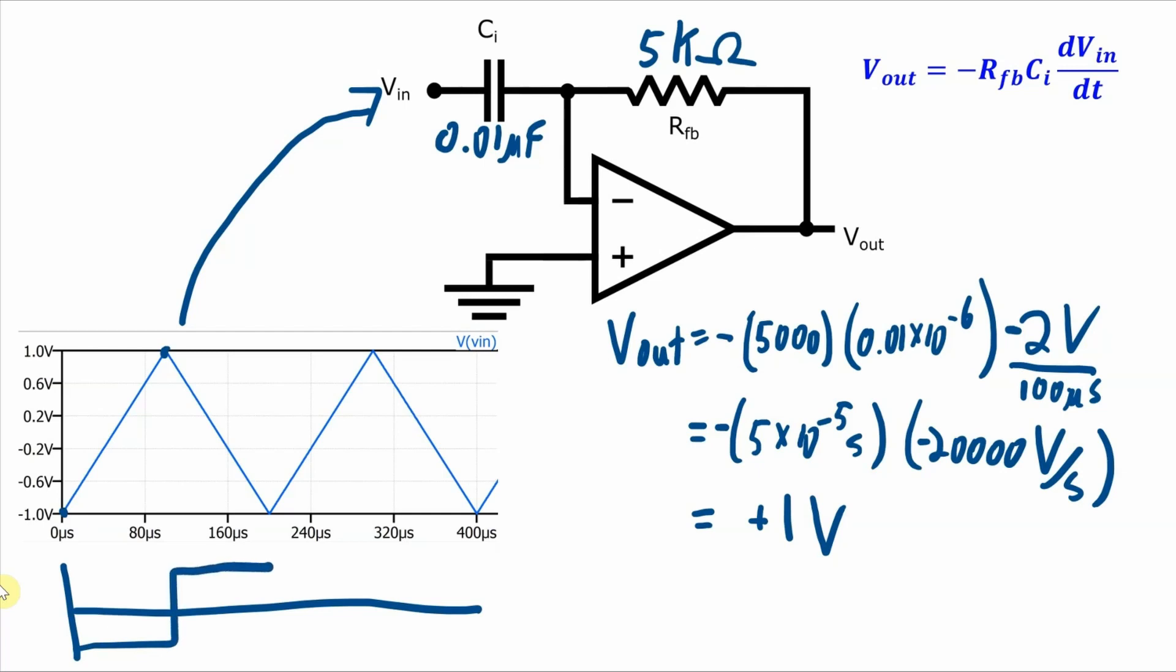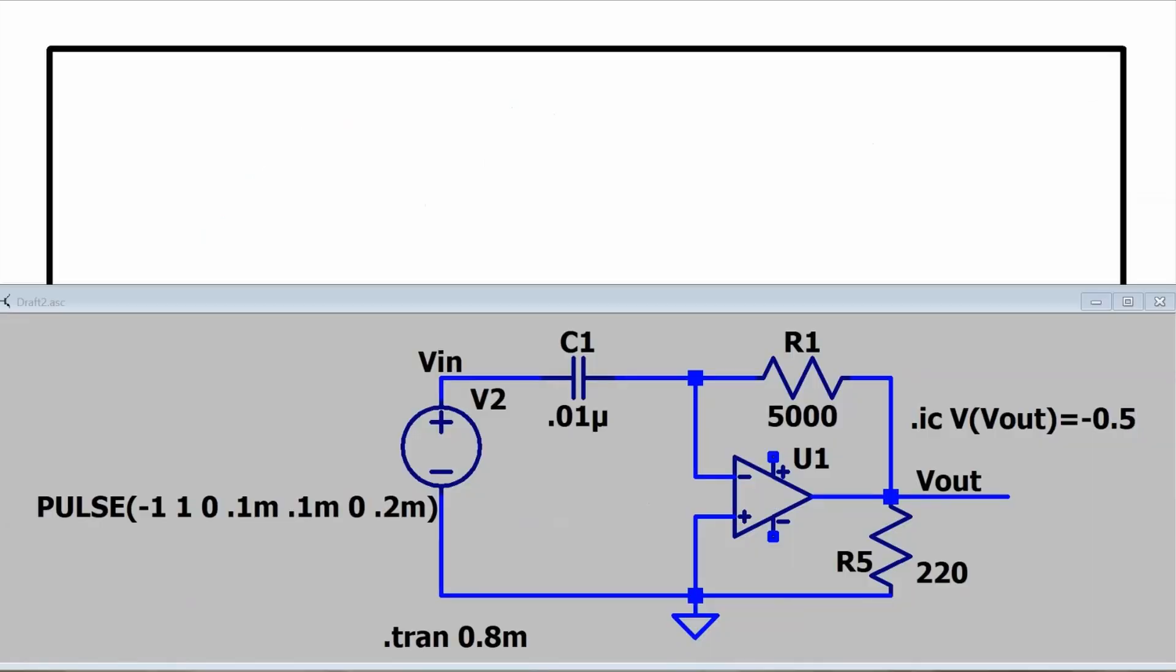And then it'll switch back to negative one for another hundred microseconds up to positive one. The output is a square wave, as we expected, swinging between minus one and one volt with the same frequency as the input. Now let's jump over to LTSpice to take a look at how this circuit runs in simulation.